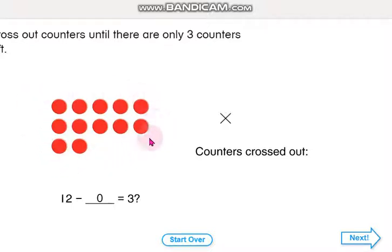What do we have to do? We have to find the missing number. But we have to take away numbers so we need only 3. We are going to take away numbers until there are 3 counters left.